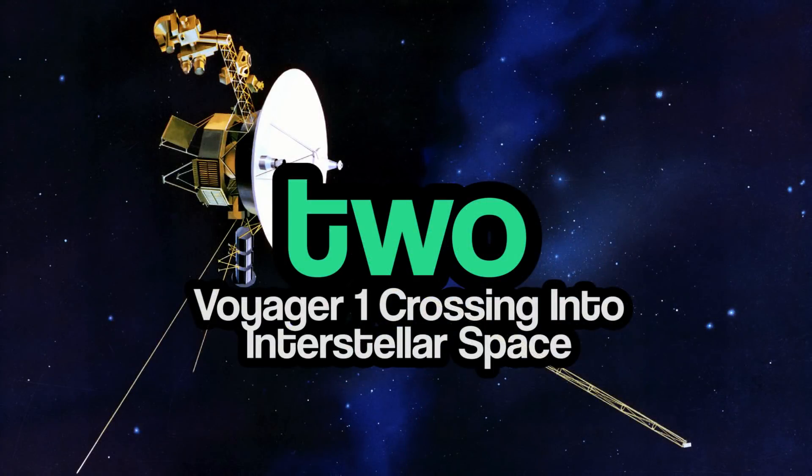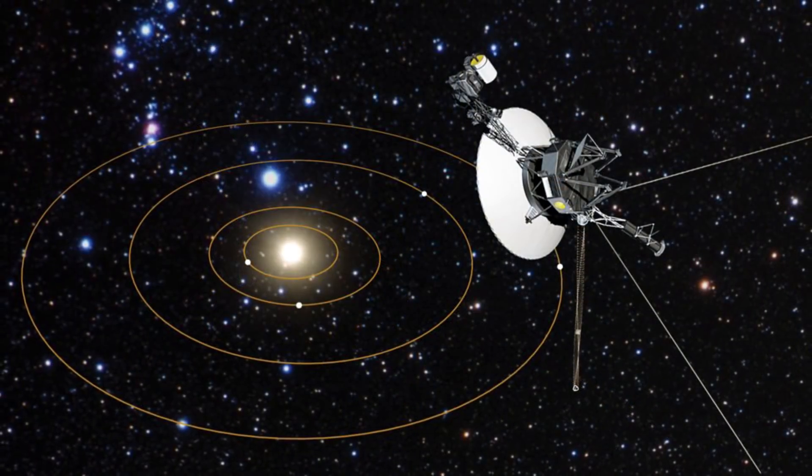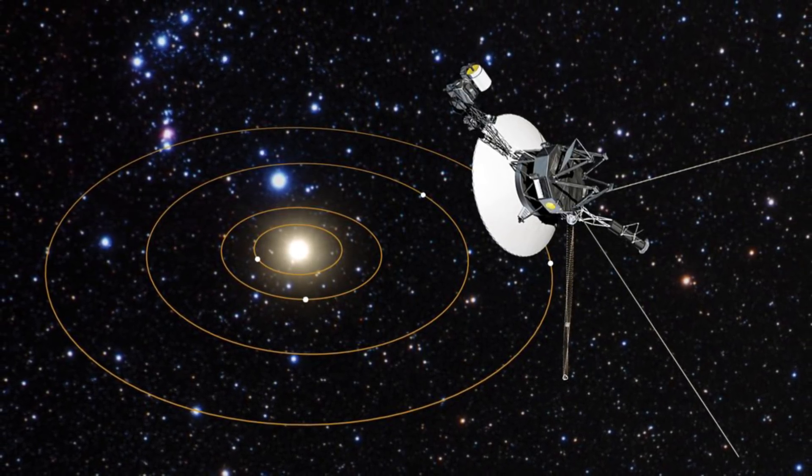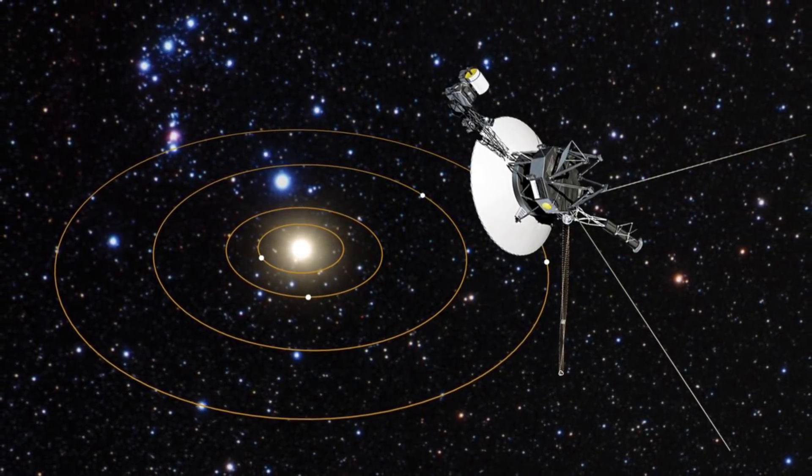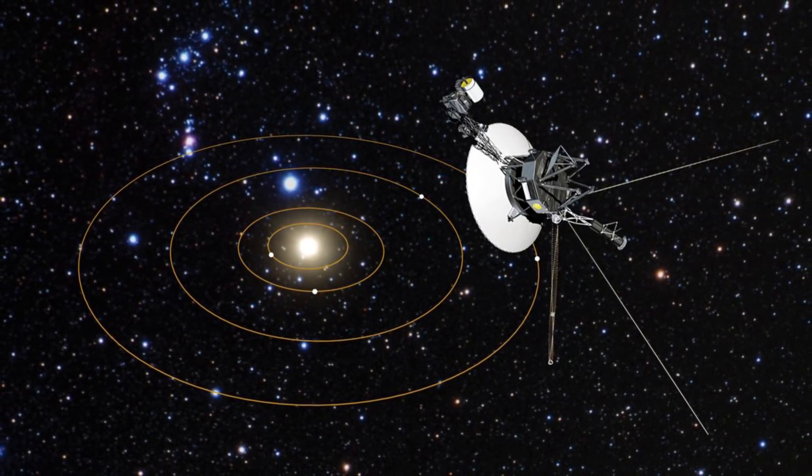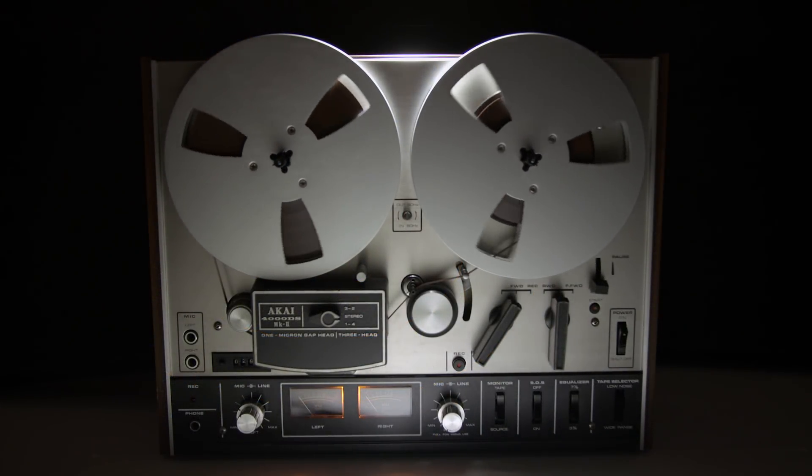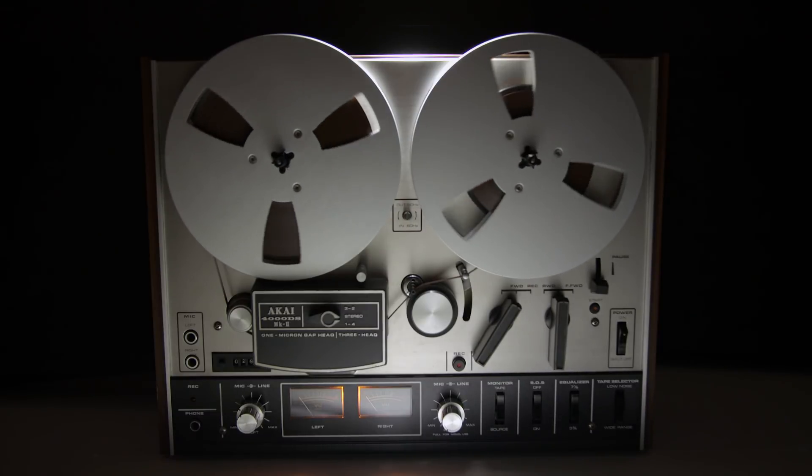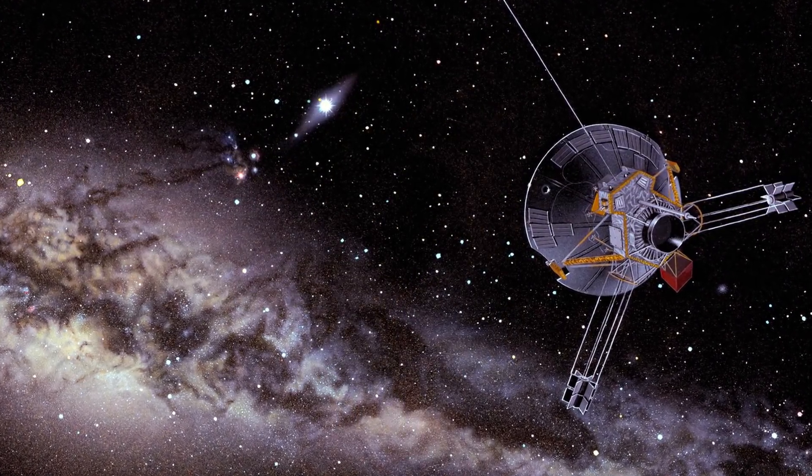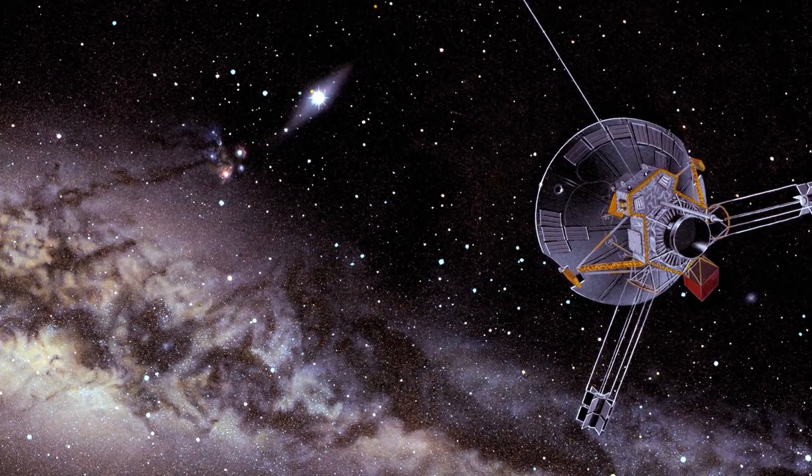Number 2, Voyager 1 crossing into interstellar space. In August 2012, NASA's Voyager 1 made history when it became the first craft ever to reach interstellar space. This also, of course, makes it the furthest distance a human-made object has ever traveled from Earth. To celebrate this incredible feat, NASA created and released a recording taken by the Voyager 1 of interstellar space. Scientists made the recording by converting the observations made by the spacecraft's plasma wave instruments into a graph and then converting that graph into audible form.